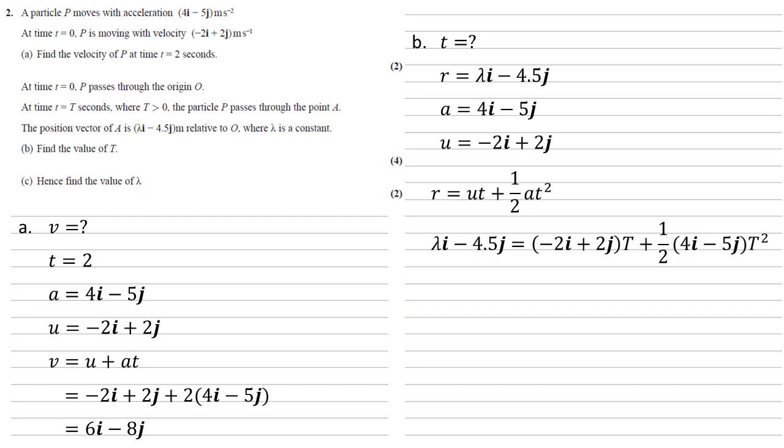Putting our values in, we get that lambda i minus 4.5j is equal to minus 2i plus 2j all times by t, plus a half of 4i minus 5j all times by t squared.